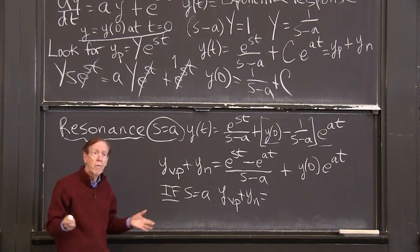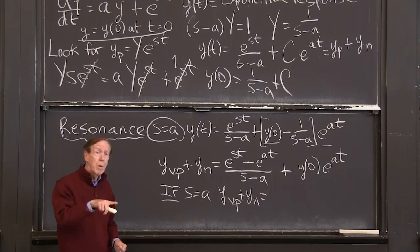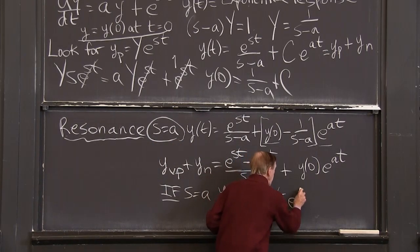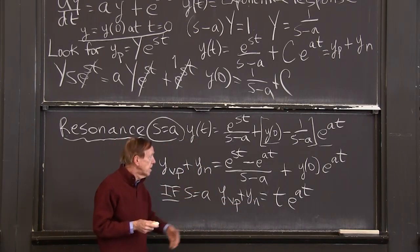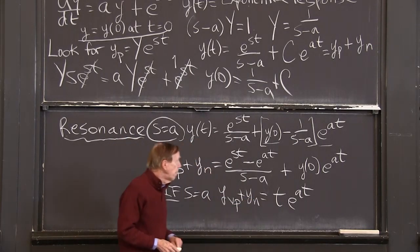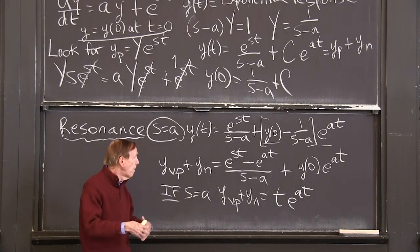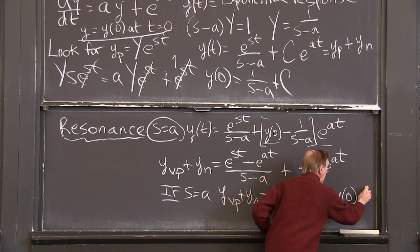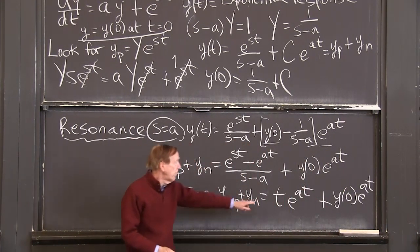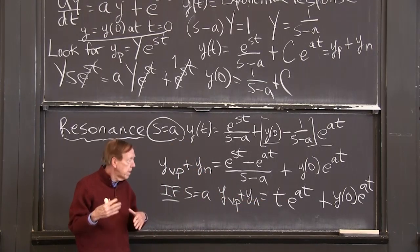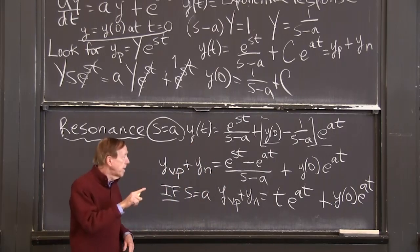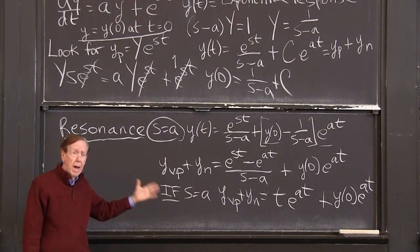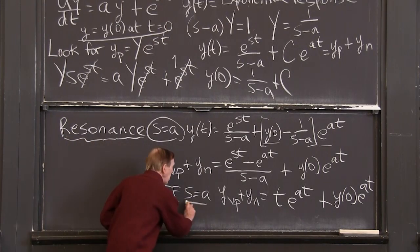So this is the case s equals a. So if s equals a, then y very particular plus y null space. So it's this very particular solution that has to have a different form. And here's the form it gets: a factor t appears. You just learn to recognize resonance by that factor t. So it will be t·e^(at). a is the same as s now, so s doesn't appear. So that's the solution, which starts from 0, and it comes from the input. And this is the part that starts from y(0) and grows. So you see, eventually this is going to be the bigger one. The resonant case grows like e^(at) with that little bit extra growth of t. So now I have the solution in that special case also when s equals a.